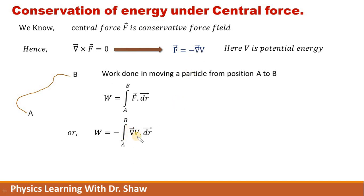So gradient of V dot product with dr vector. If we evaluate this integration, it will be simply V. You already know this from the definition of gradient. And just substitute the limits. You will have work done is equal to potential energy at position A minus potential energy at position B.